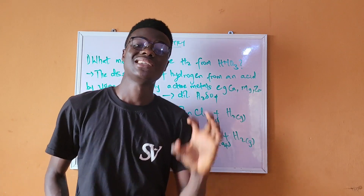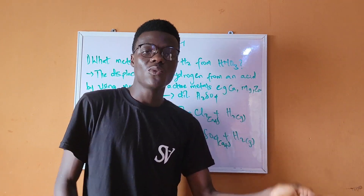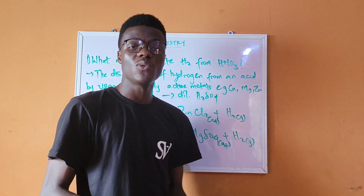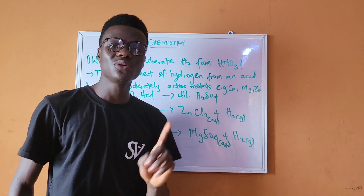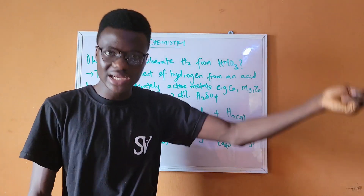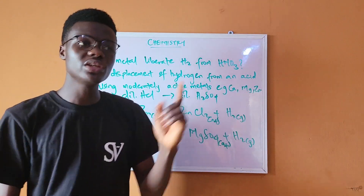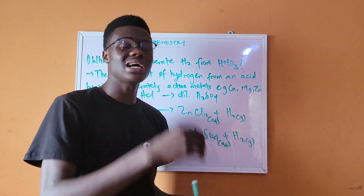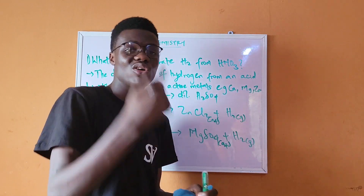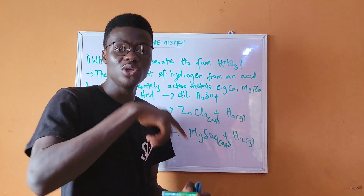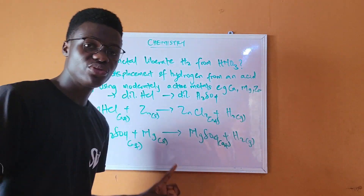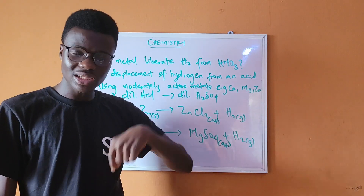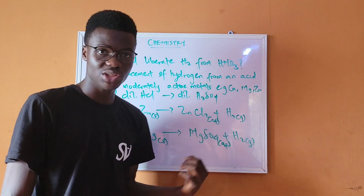An oxidizing agent causes the oxidation of another species while itself gets reduced. In terms of hydrogen, oxidation is the loss of hydrogen and reduction is the gain of hydrogen. So HNO₃, being an oxidizing agent, would gain hydrogen itself rather than releasing it — meaning hydrogen would be added to HNO₃ instead of being liberated.